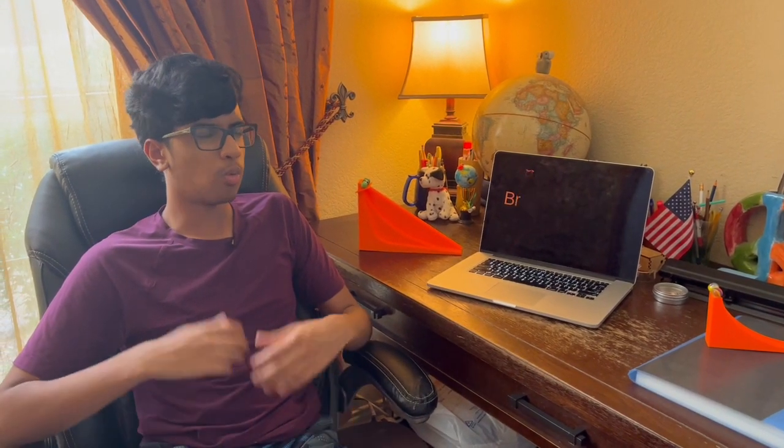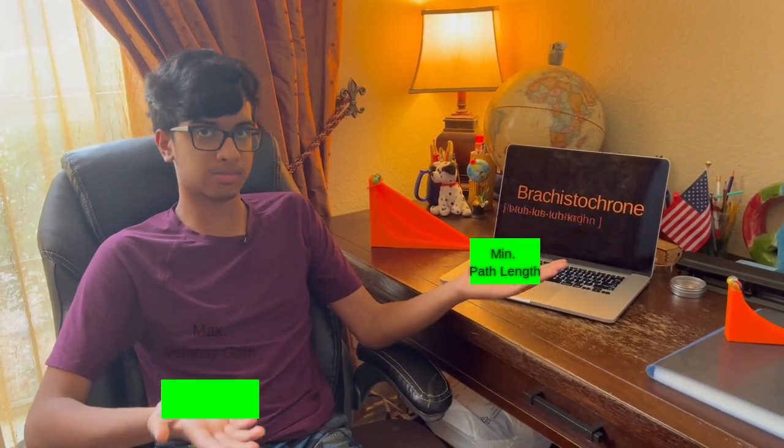Surprised? This special curve is known as the brachistochrone. It means shortest time in ancient Greek. Why would you win? This curve has the perfect mix of minimum path length and maximum velocity gain.